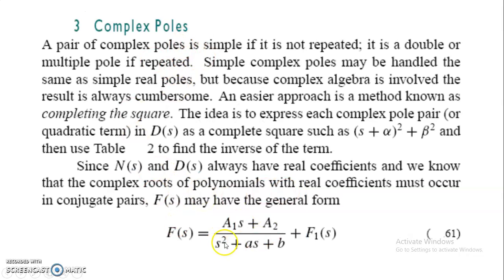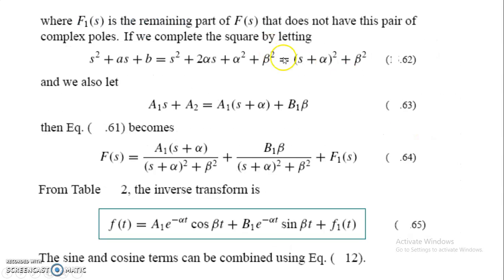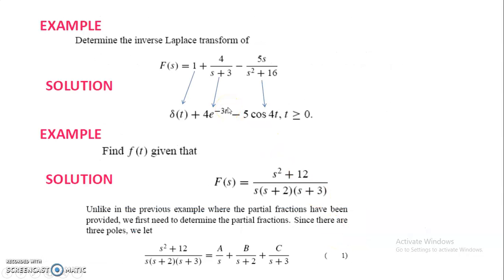For complex poles, we apply the quadratic expression in root form. The roots can be expressed as s plus alpha, all squared plus beta squared. This is how we find alpha and beta for complex roots. The inverse of the s plus alpha over the quadratic gives a cosine term, and the inverse of the beta term gives a sine term. The result is e raised to minus alpha t multiplied by a combination of cosine and sine of beta t.